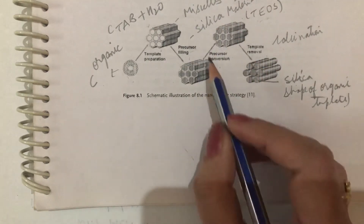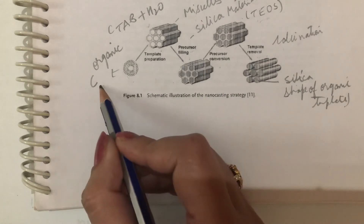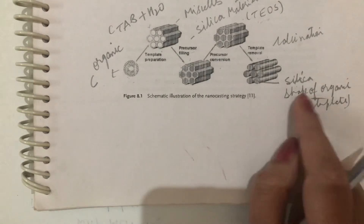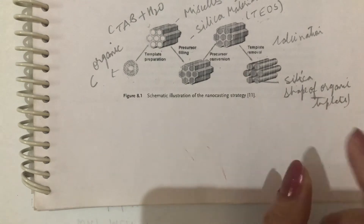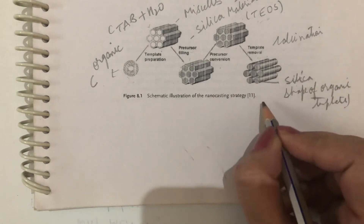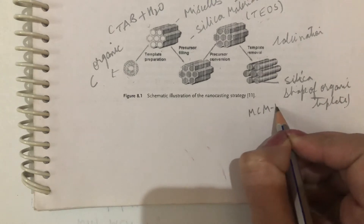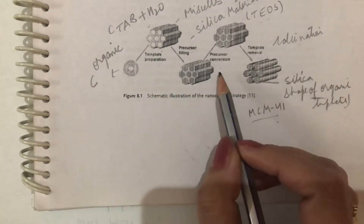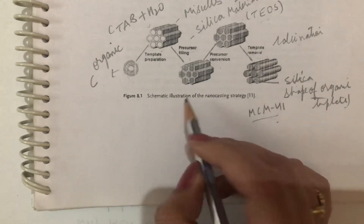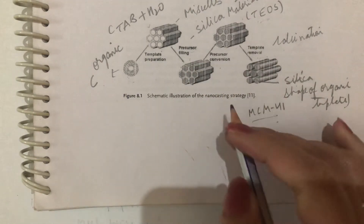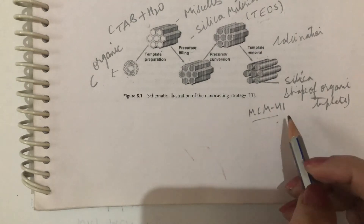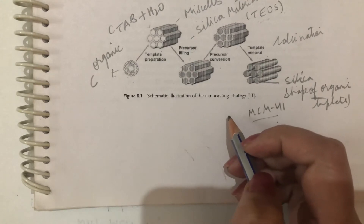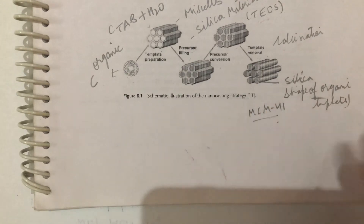Since MCM-41 is only a silica material, we only need the silica. We add the organic material so that it gives shape to the final material, whose primary constituent is silica only. This is why the final material is called MCM-41. This diagram illustrates the nanocasting method and can also be used for other materials beyond MCM-41.